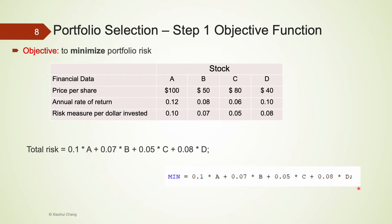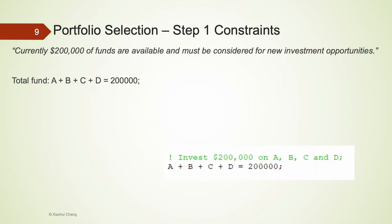There are several constraints in this example. We only have $200,000 of funds to invest, meaning that the total sum of dollar amounts A, B, C, D equals $200,000. So this is going to be our first constraint.